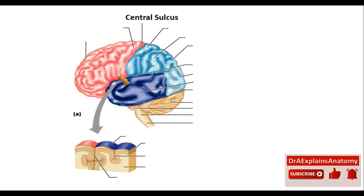This sulcus right here is the central sulcus. A sulcus is a superficial cut. We also have the lateral sulcus on the side, and the parietal occipital sulcus. These are the three main sulci.